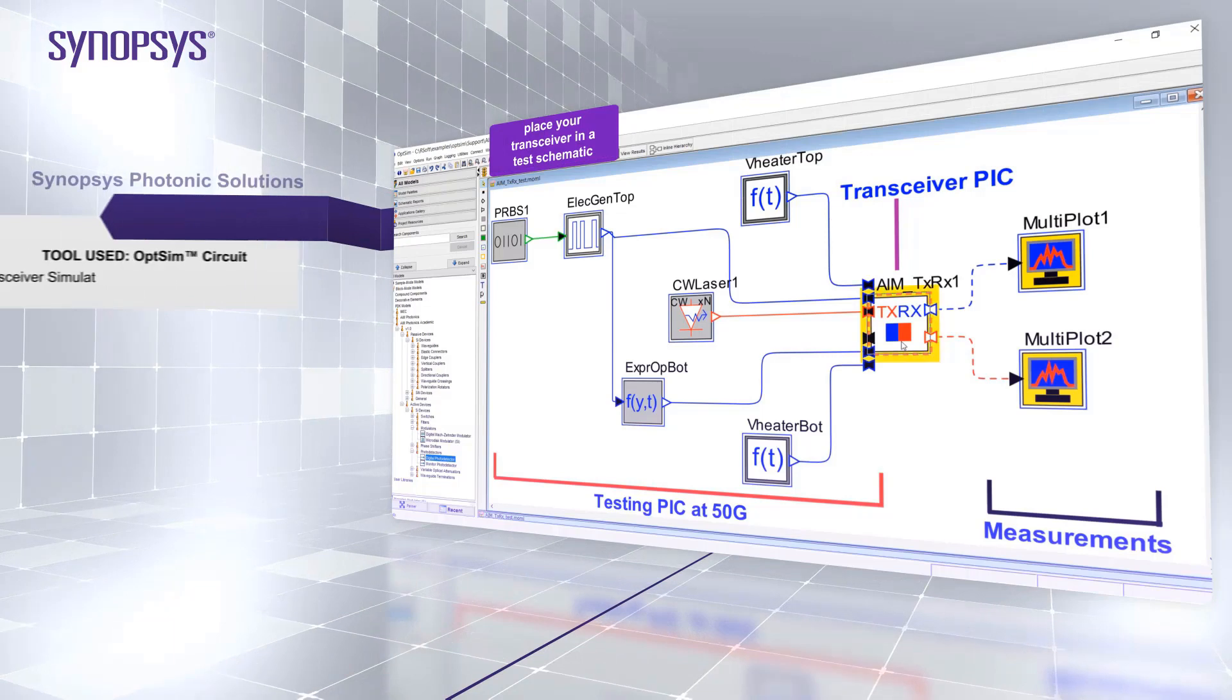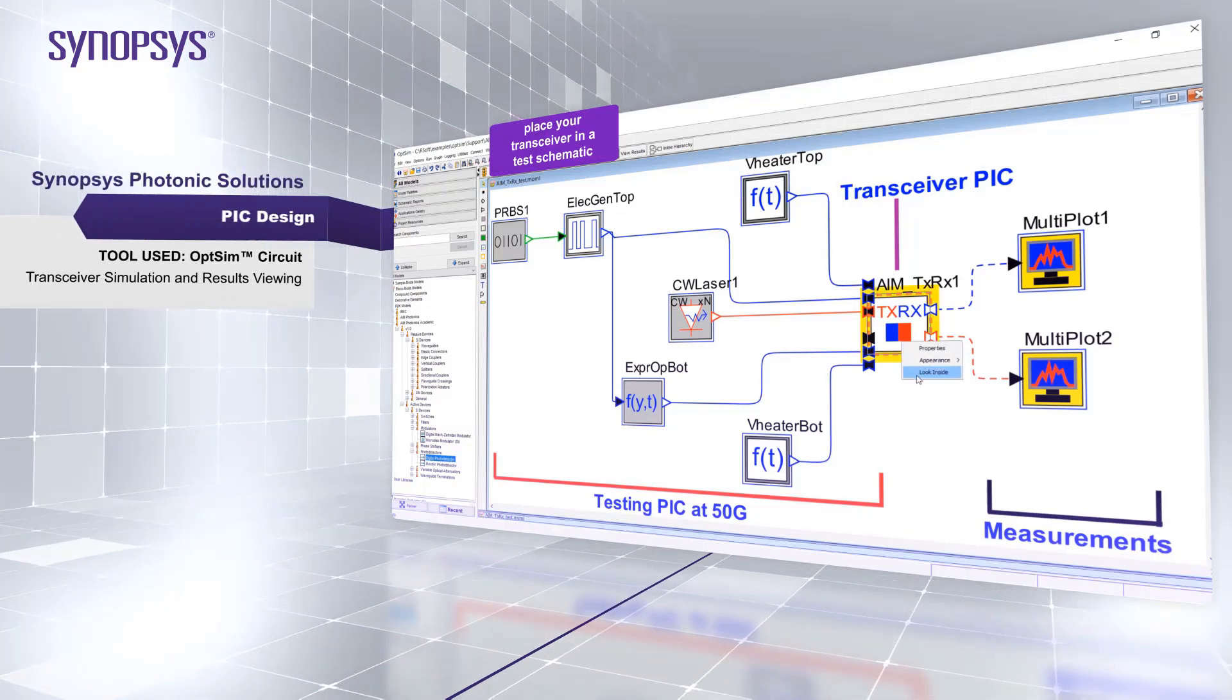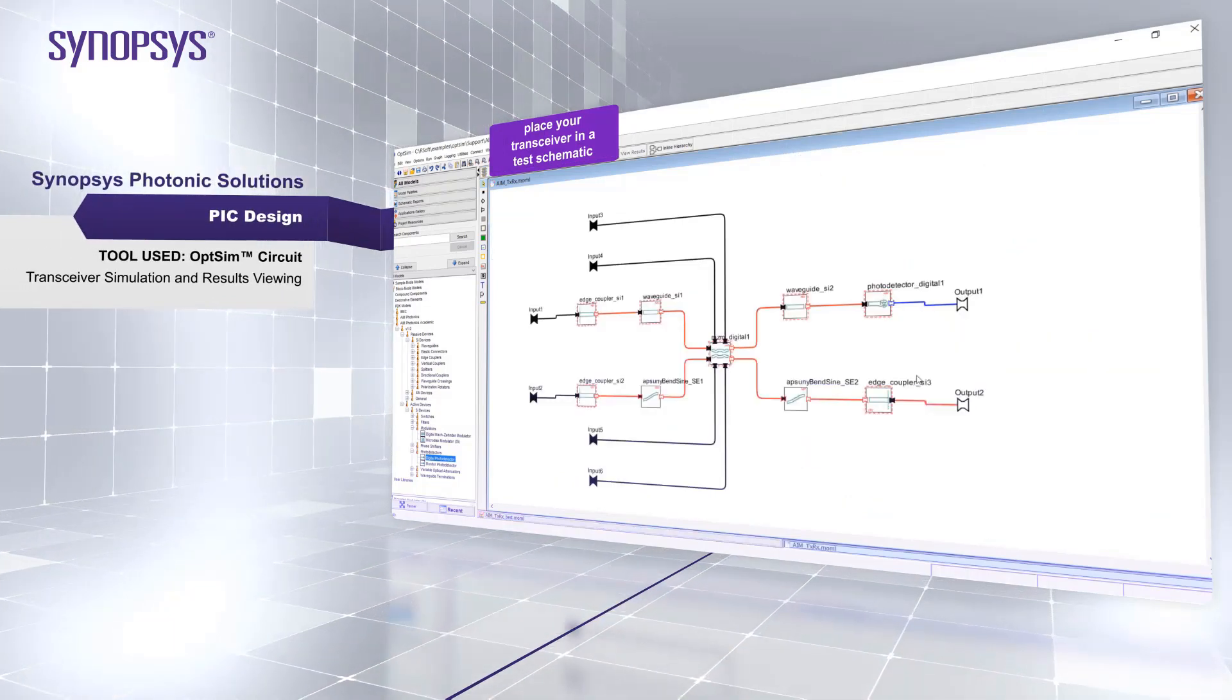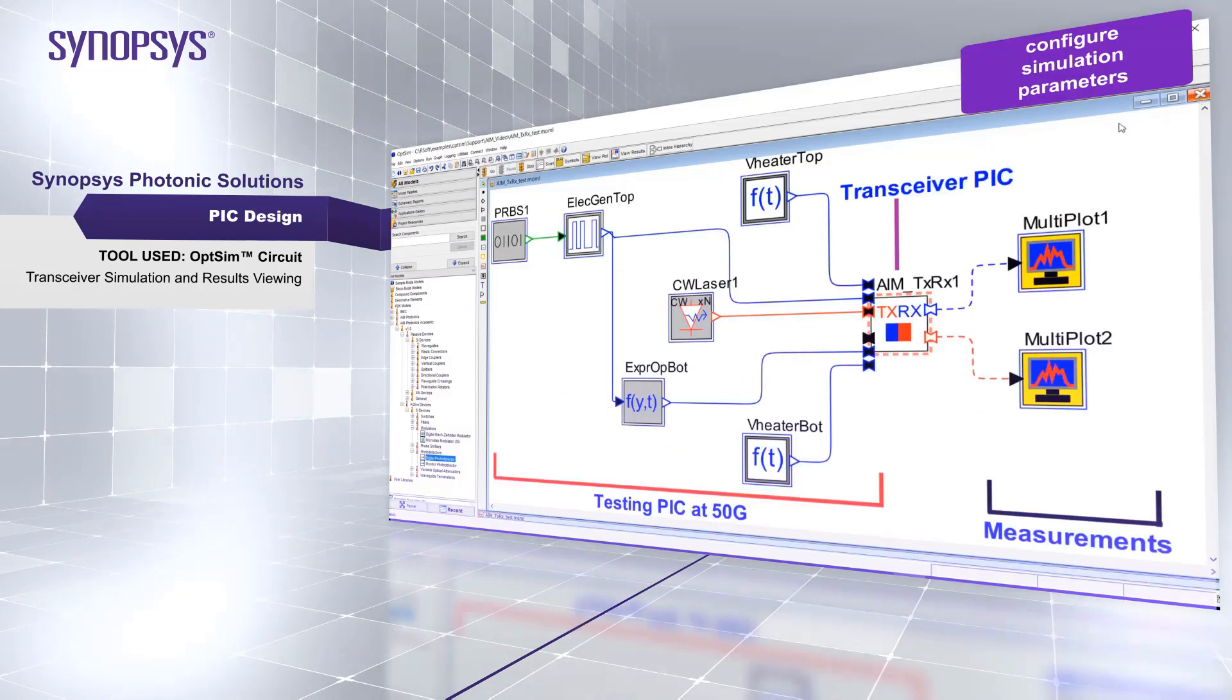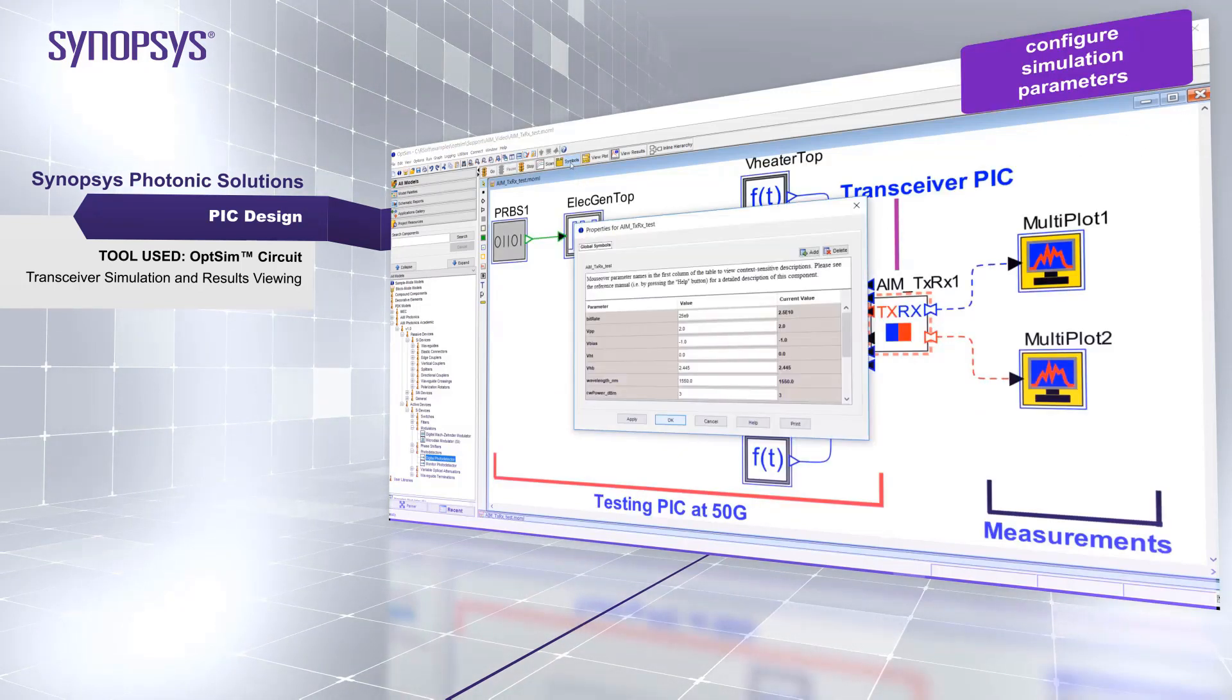Now you can place a hierarchical representation of your transceiver PIC in a test schematic. You can adjust the biasing of the MZM, then run a simulation to study the circuit characteristics and the time and frequency domains, such as the photodetector output eye diagram for a 50G back-to-back operation.